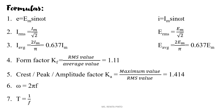The form factor is the ratio of RMS value to average value. Solving Im/√2 divided by 2Im/π gives 1.11. The crest factor, or amplitude factor Ka, equals maximum value divided by RMS value, which gives 1.414. Also remember: ω = 2πf and T = 1/f. We will use all these formulas to solve problems.